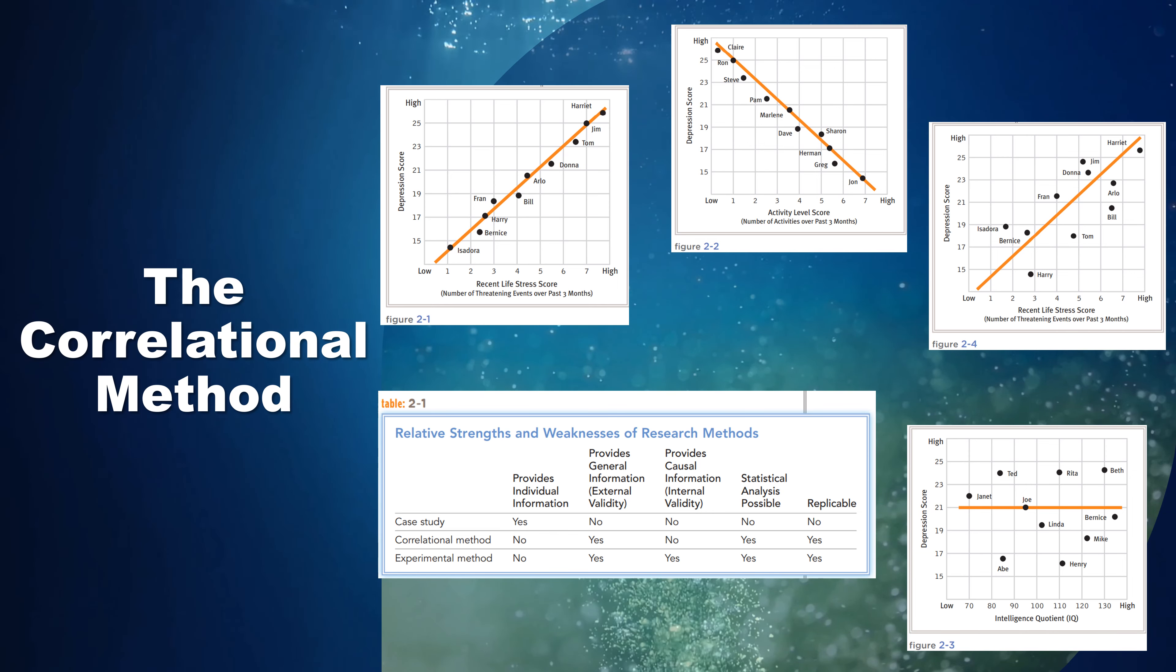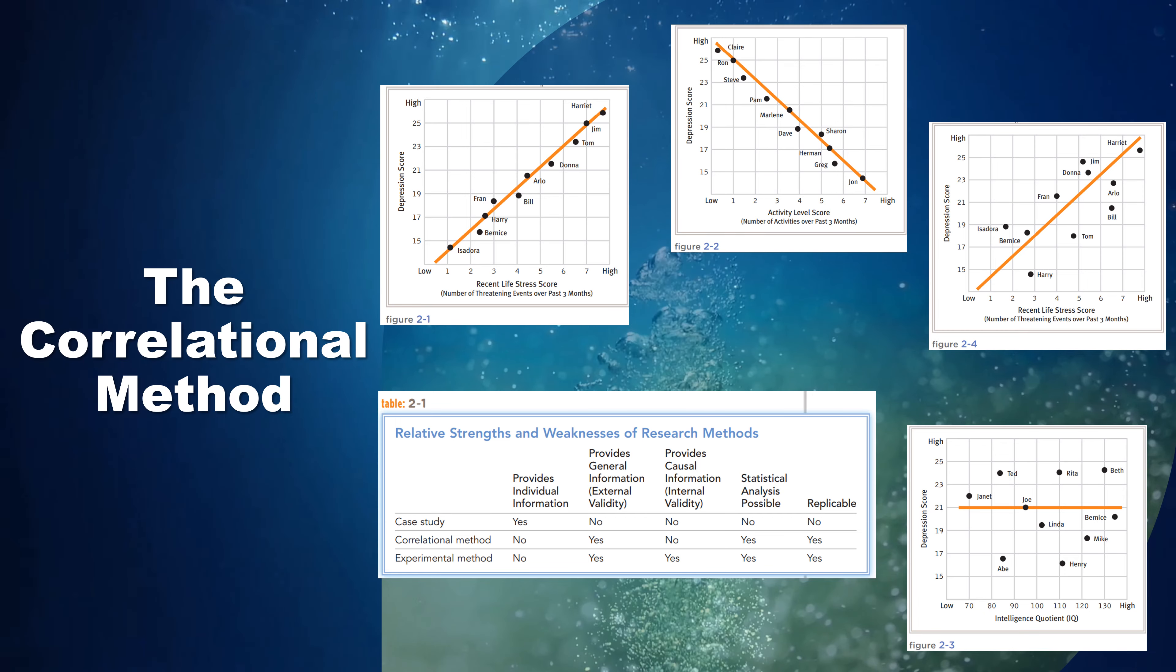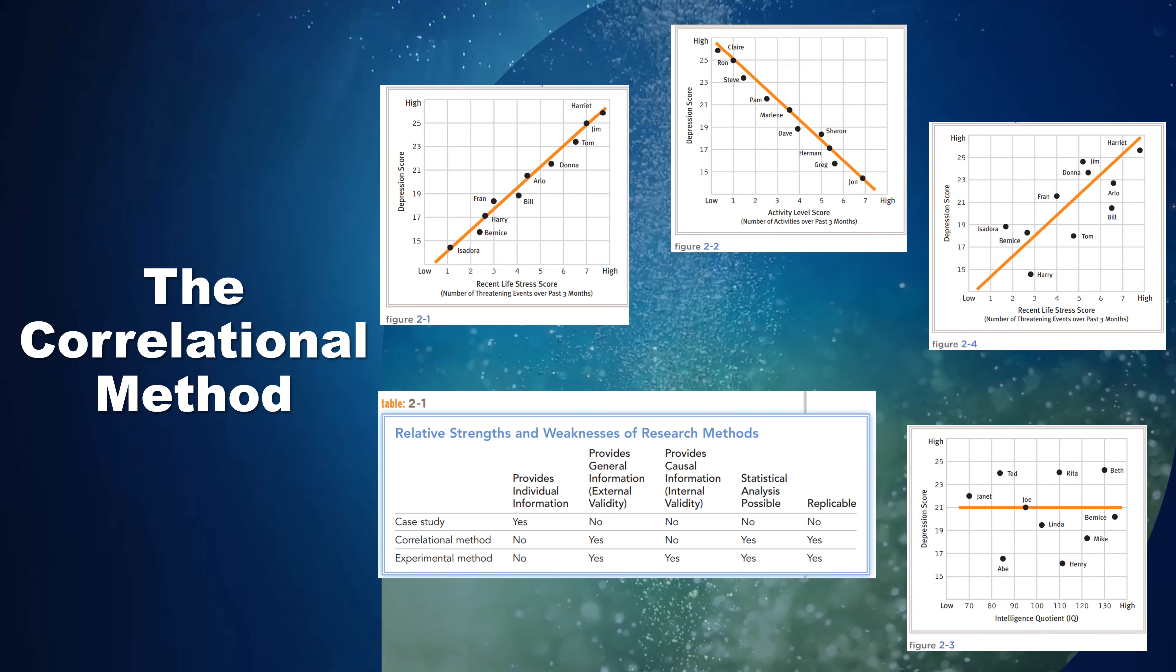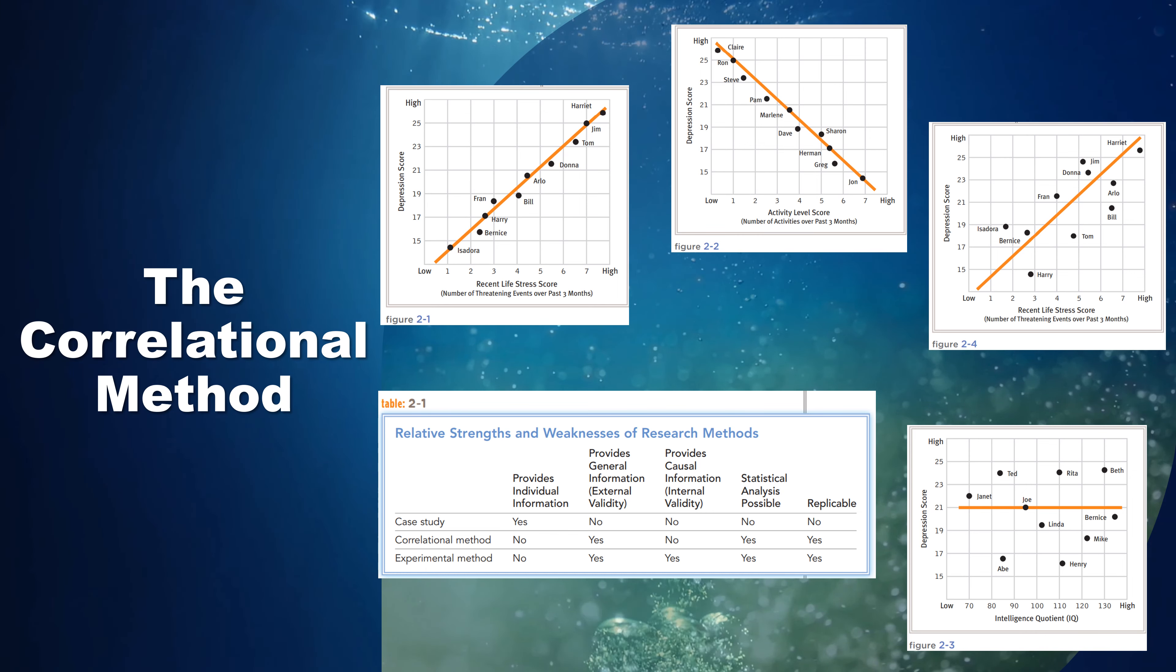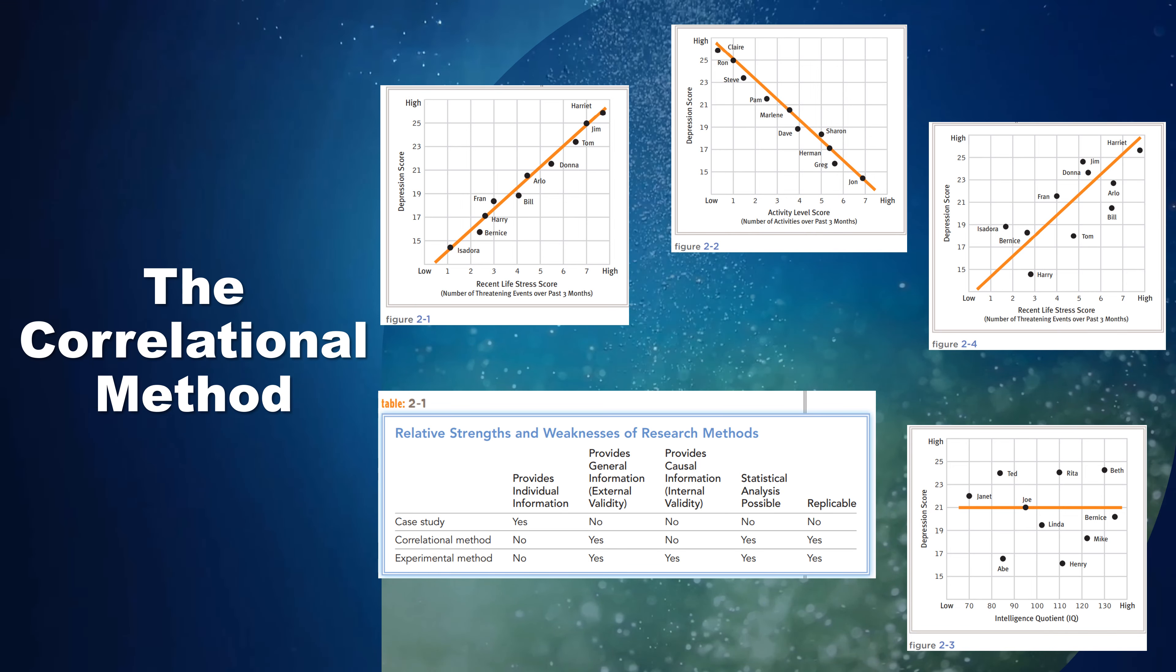Such epidemiological studies have helped researchers identify groups at risk for particular disorders. Women, it turns out, have a higher rate of anxiety disorders and depression than men, while men have a higher rate of alcoholism than women. Elderly people have a higher rate of suicide than young people. Hispanic Americans experience post-traumatic stress disorder more than other racial and ethnic groups in the United States. And persons in some countries have higher rates of certain mental disorders than those in other countries.